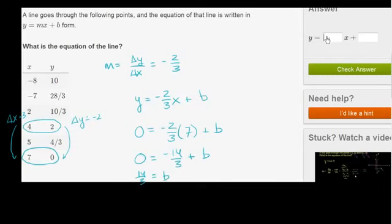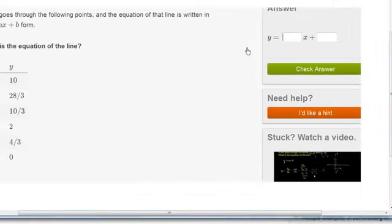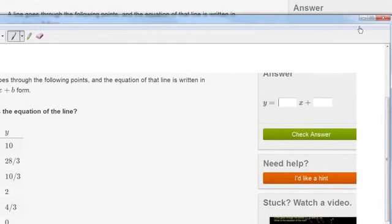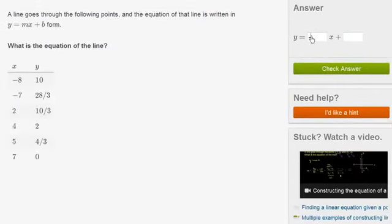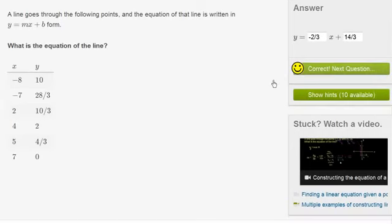So this is going to be y is equal to negative. Let me go back to the other screen. So it's y is equal to negative 2 thirds x plus 14 over 3. So let me do that. So y is equal to negative 2 thirds x plus 14 over 3. Let's check our answer. We got it right.